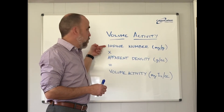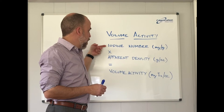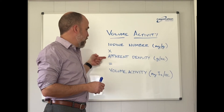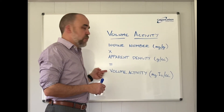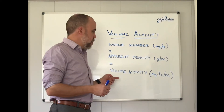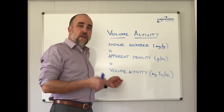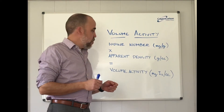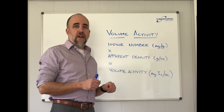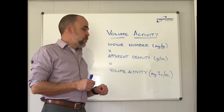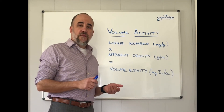So again, simple, standard ASTM methods — iodine number, apparent density — those two multiplied put the activated carbons on the same footing. So now we're actually doing an apples-to-apples comparison, and you can understand the value of the iodine number in the application. Thank you very much for your time and watching this video today.